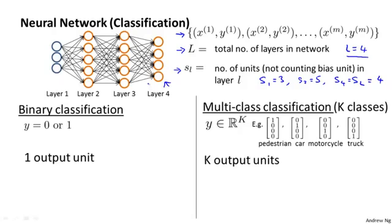We're going to consider two types of classification problems. The first is binary classification where the labels y are either 0 or 1. In this case, we would have 1 output unit. So this neural network on top has 4 output units but if we had binary classification we would have only 1 output unit that computes h(x).